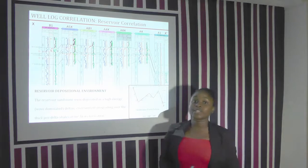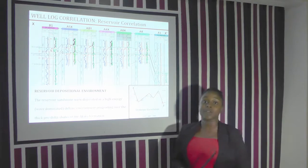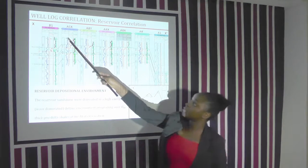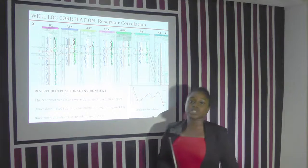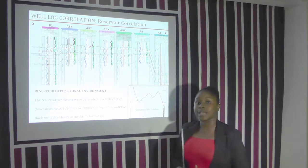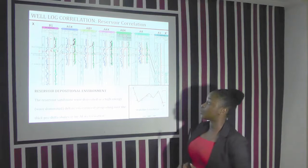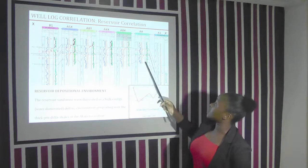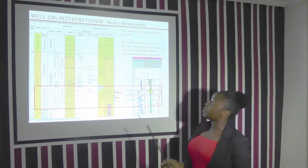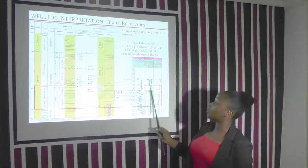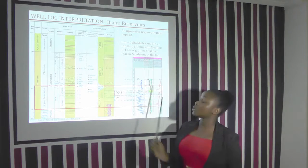A well log correlation of the wells that had adequate gamma ray and resistivity logs was taken from west to east, starting from B1 down to A1. The reservoir sandstone was deposited in a high-energy deltaic environment and was underlain by a thick shale in the Akata Formation. We were able to delineate our contacts and our reservoirs P0.5 and P1 on our logs, which were tied to our sequence stratigraphy.